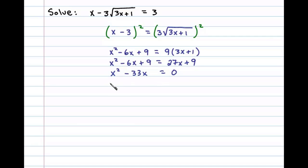Now factoring this, we can see x is the GCF. Factoring out an x, we'll be left with x minus 33 equals 0. At this point we set each factor equal to 0, so either x equals 0 or x minus 33 equals 0. And so our two possible solutions are 0 or 33.